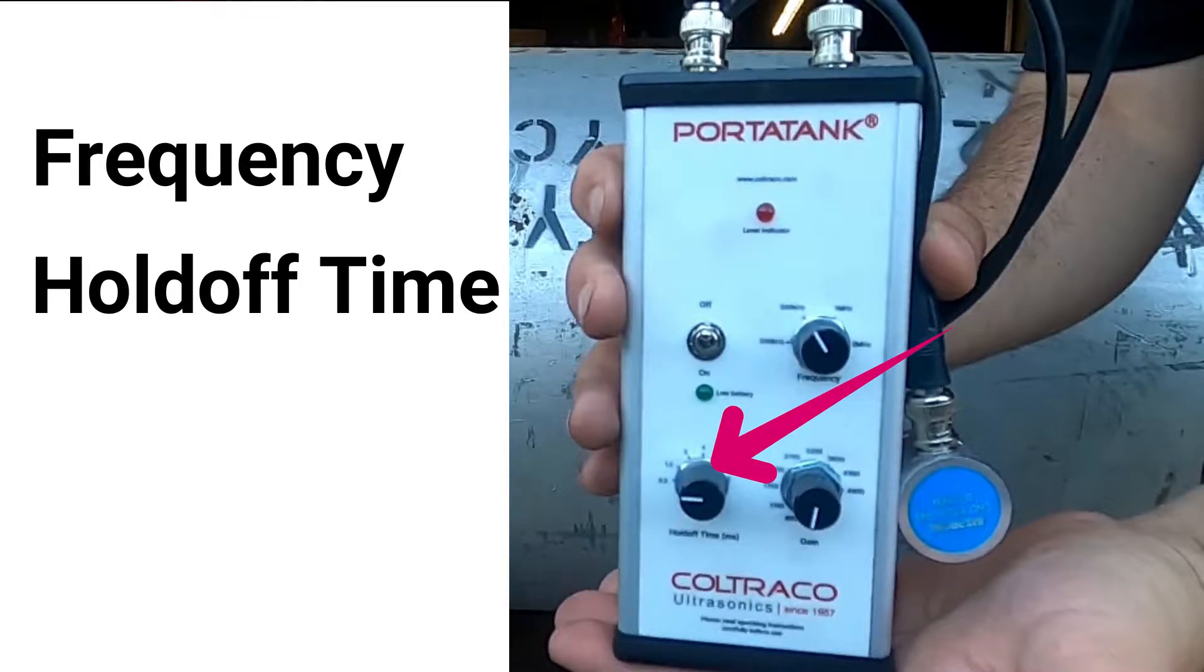Second is hold off time, also known as delay time, which means how many seconds it takes for the sensor to receive the signal. And the third knob is gain. This increases the signal strength to get a more accurate reading.